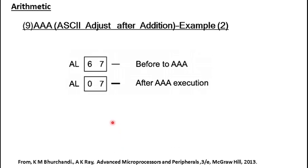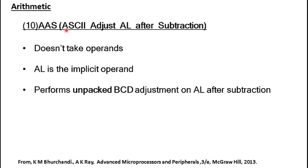Now let's see AAS — ASCII Adjustment of AL After Subtraction. The way it works is exactly the same as AAA, but the adjustment is different. Since the result comes from subtraction, we subtract 6 instead of adding it, and instead of adding 1 to the higher byte we subtract 1 from it. That's the only difference between AAS and AAA. Both don't take operands; they work on AL, and finally we have the unpacked BCD value present in AL.